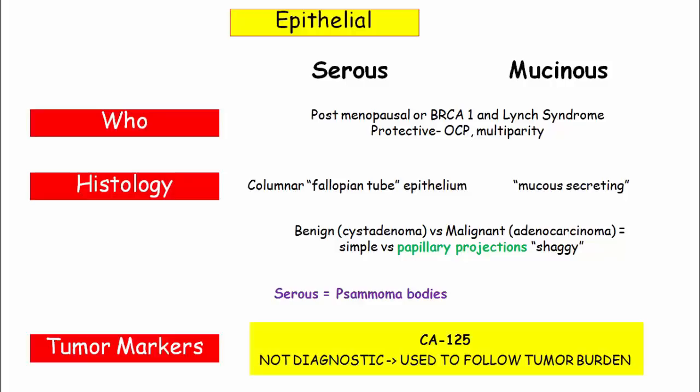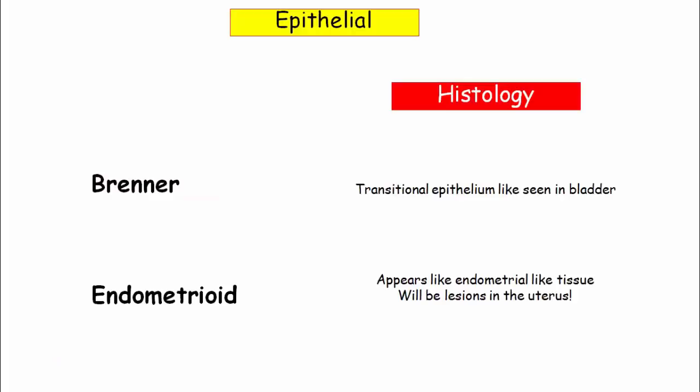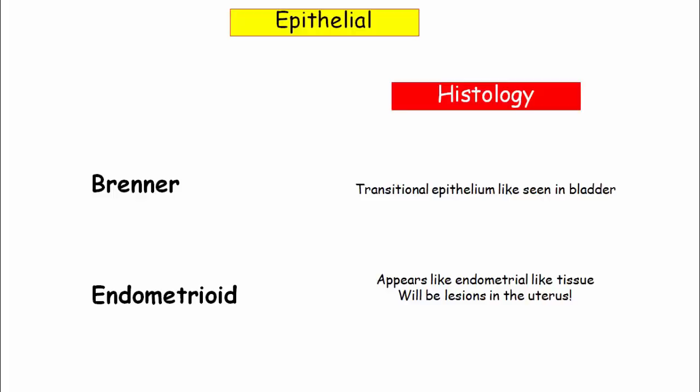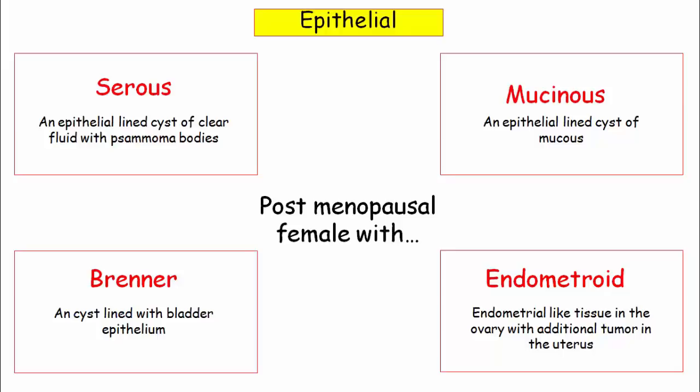Now for the last two epithelial tumors. Brenner tumors look like transitional epithelium seen in the bladder. For endometrioid tumors, they appear like endometrial tissue with glands and stroma. If there is an endometrioid ovarian tumor, it's very often associated with lesions in the endometrium, so make sure you're checking that too. To summarize, the most common ovarian tumors: you will have a postmenopausal woman with either an epithelial-lined cyst of clear fluid with psammoma bodies, or an epithelial-lined cyst full of mucus, or a cyst lined with bladder epithelium, or endometrial-like tissue in the ovary with additional tumor in the uterus.